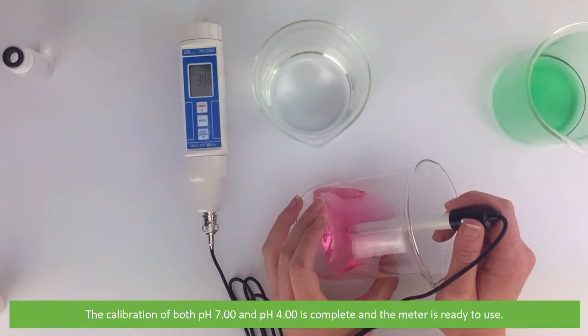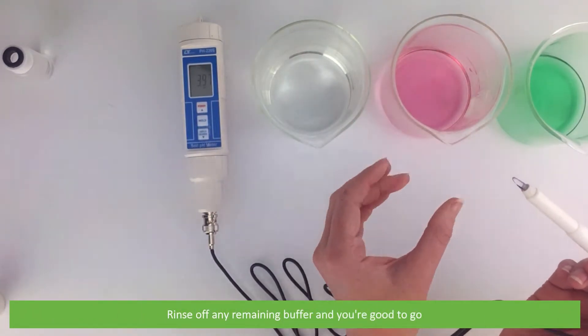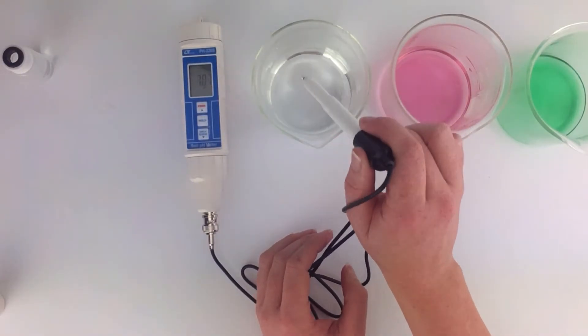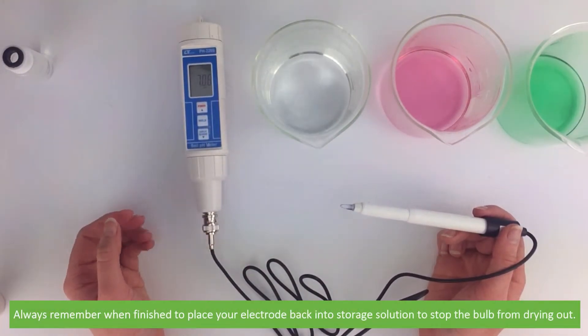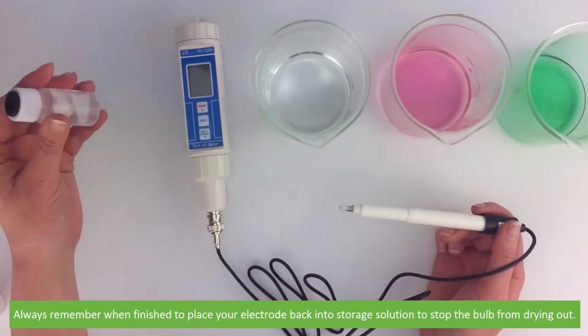Rinse off any remaining buffer and you're good to go. Always remember when finished to place your electrode back into storage solution to stop the bulb from drying out.